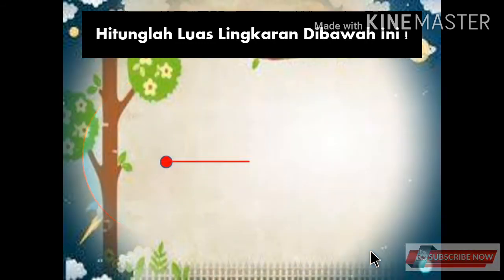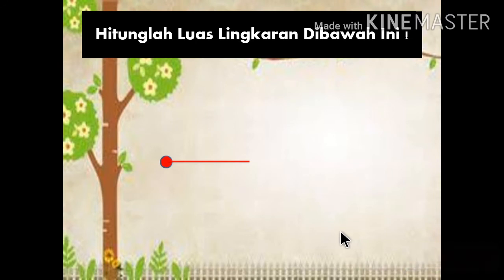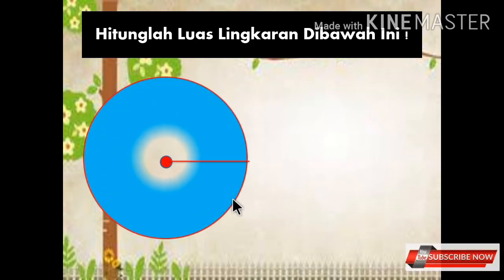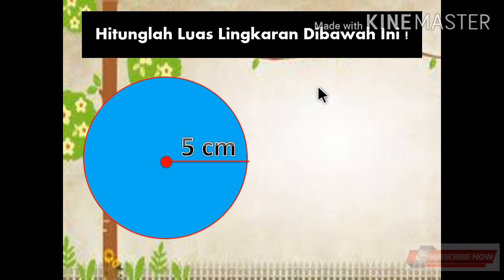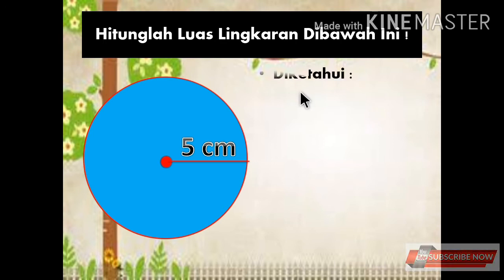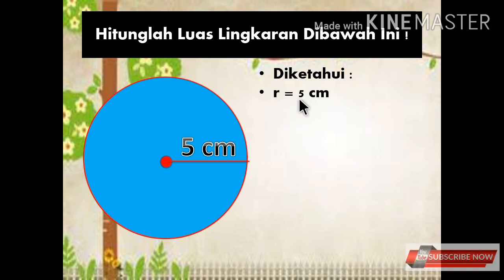Kita ke contoh yang kedua. Hitunglah luas lingkaran di bawah ini. Di sini ada sebuah lingkaran yang memiliki jari-jari 5 cm — berapakah luasnya? Kita kerjakan bersama-sama.